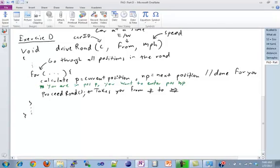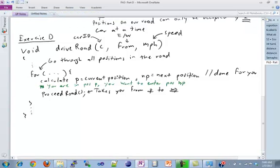After you call proceed road, you have entered, so you now are in position NP. And this means, obviously, because a car can only be in a single position at a time, that you have left position P.